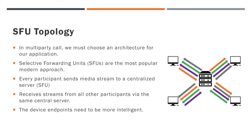Selective Forwarding Unit — SFU — is the most popular modern approach. In SFU architecture, every participant sends his or her media stream to a centralized server, and receives streams from all other participants from the same central server.